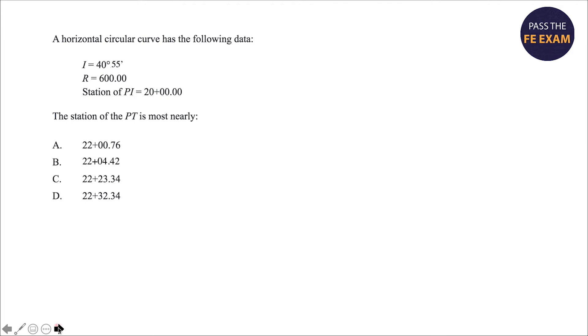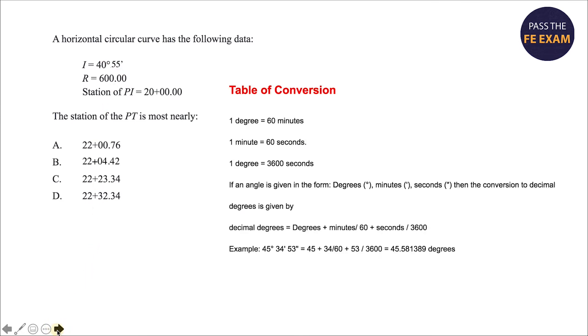You can see that our deflection angle is given in 40 degrees and 55 minutes. That's not a number you can work with. You want to break that number into a decimal. How can you do that? You can do that by following the equation here. If you want to convert minutes to a decimal, you divide by 60. If you happen to have seconds as well, you can divide them by 3600. There's an example here, but I'm going to just do it for our problem.